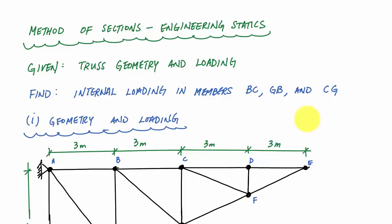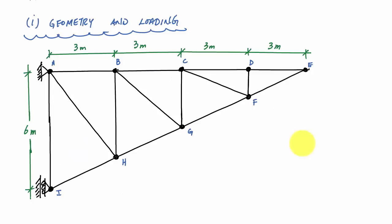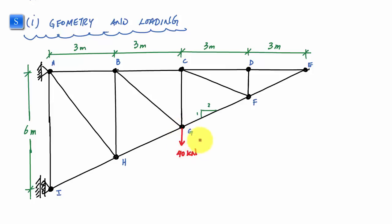Here is what the truss looks like. It's like a cantilever truss. I have three-meter spans and a six-meter height. This geometry has a two-to-one ratio. The loading of my structure is 40 kilonewtons pointing down at point G and 20 kilonewtons at point E.